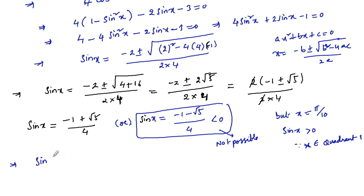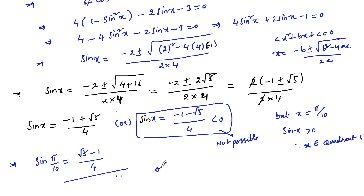Therefore sin x = sin(π/10) = (√5 - 1)/4. Hence we conclude that sin(π/10) = (√5 - 1)/4, or equivalently, sin(18°) = (√5 - 1)/4. Thank you.